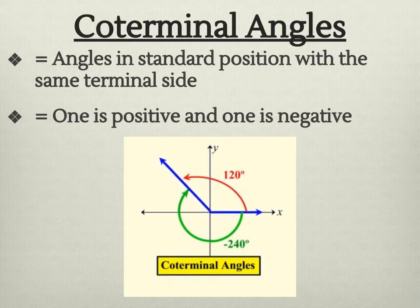Coterminal angles. These are angles that are in the standard position with the same terminal side. So this side here, they share. So we could talk about a positive 120 going in that direction. But if we go in the clockwise direction, we're talking about the negative angle, and that would be negative 240. You could keep adding the 360 to these, and you could have multiple answers.